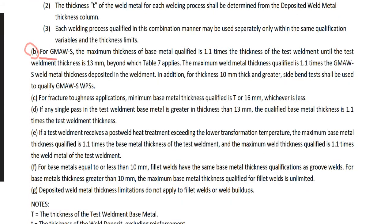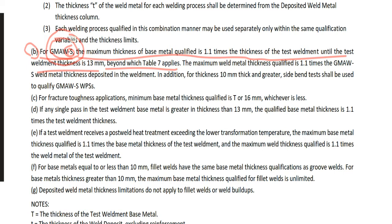Note B: for GMAW-S — where S means short-circuiting transfer mode — the maximum thickness of base metal qualified is 1.1 times the thickness of the test weldment until the test weldment thickness is 13mm, beyond which Table 7 applies. GMAW-S is given in the actual CWA Part B questions, so you don't have to worry about its definition — just apply the rule when you see it.